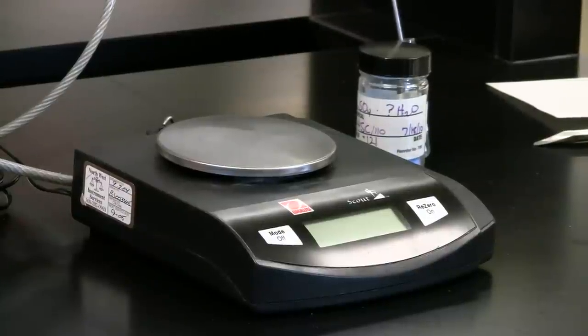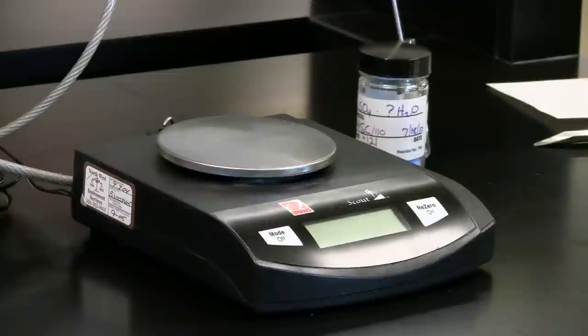In chemistry lab, you will need to measure the mass of samples. We have two types of electronic balances used for this purpose: analytical balances and top-loading balances.